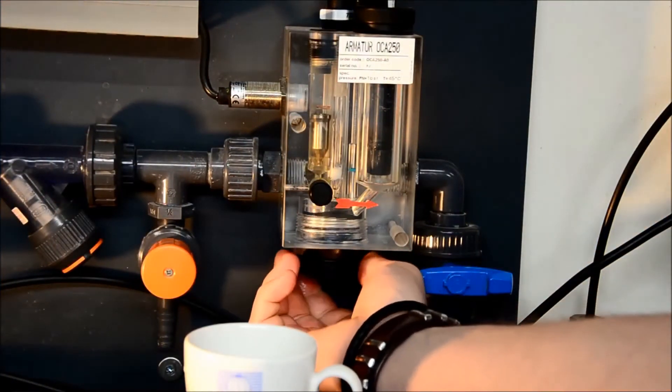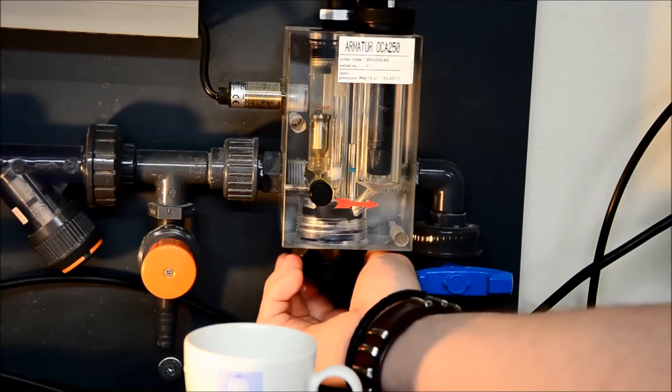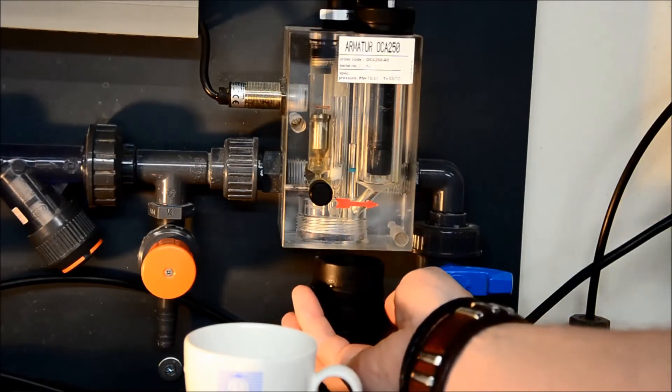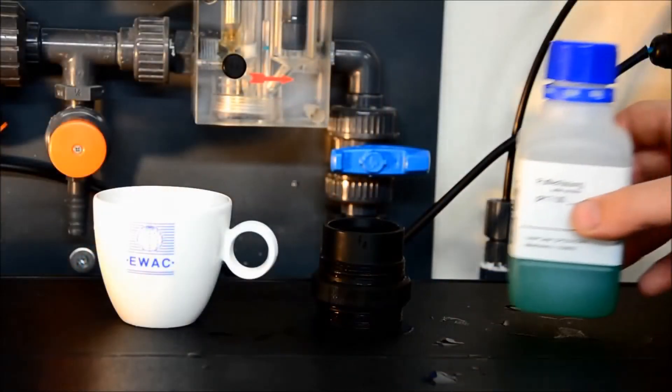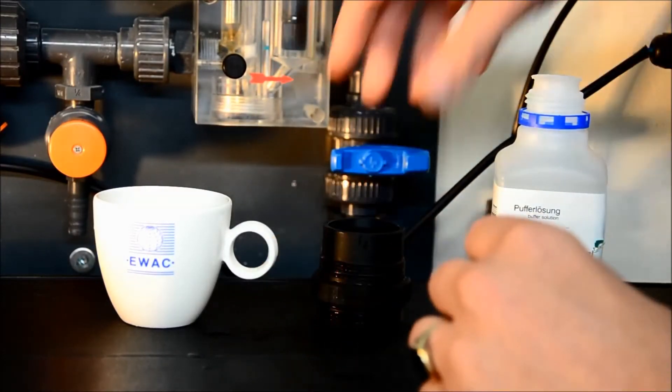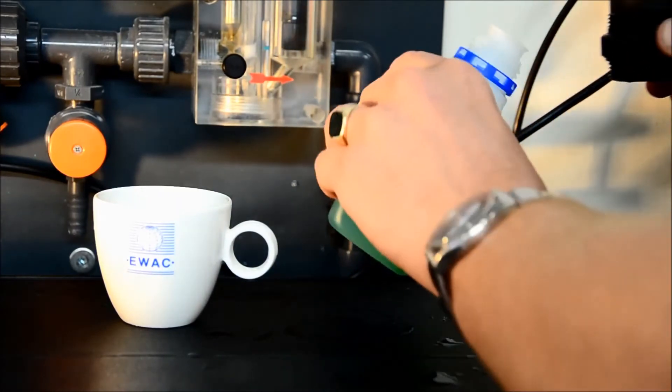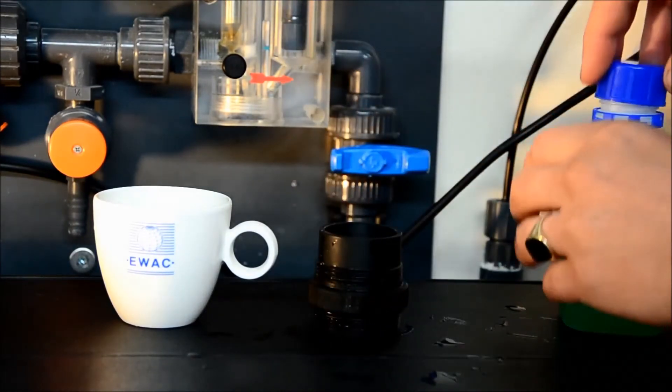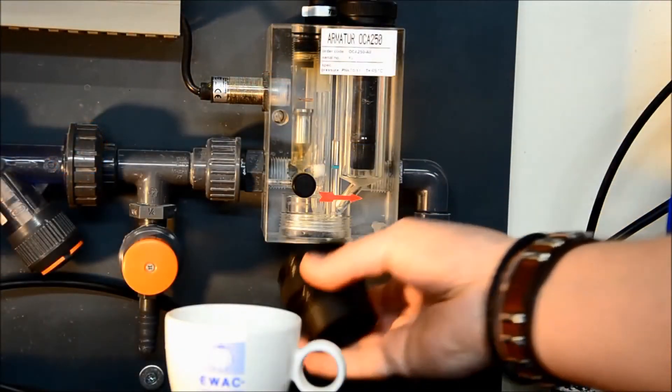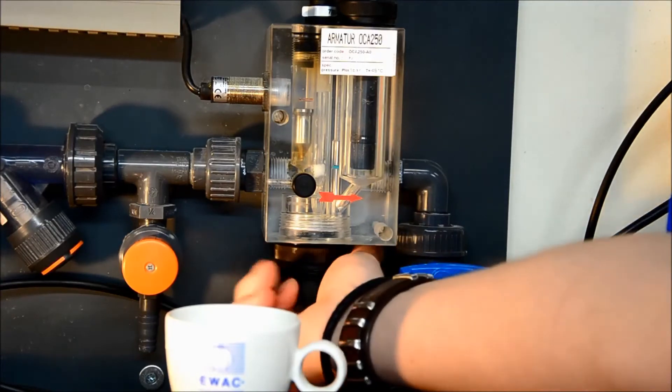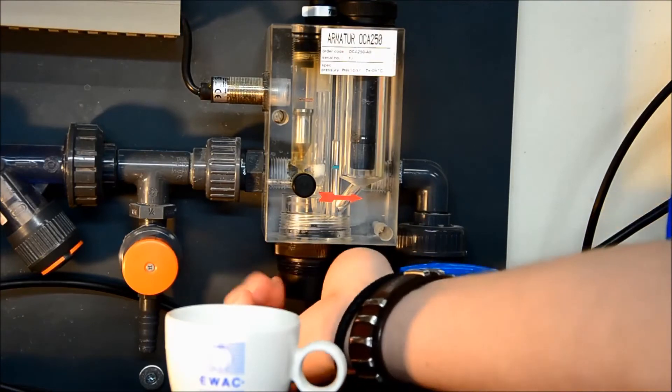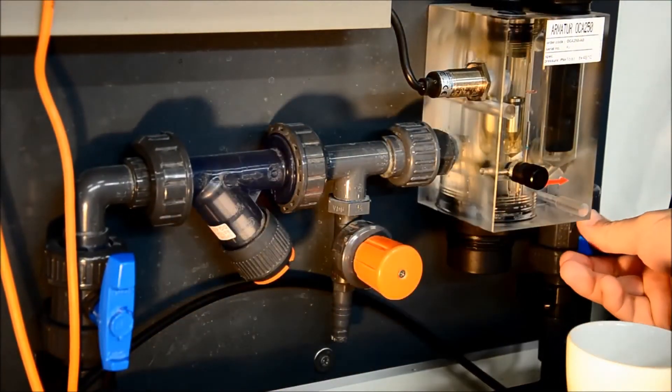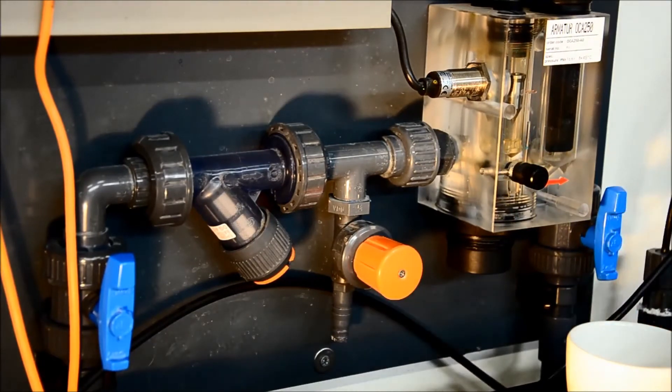Now we can remove the calibration cup from the measuring unit. The calibration fluid can be poured back into the container. After that the cap can be screwed back into the measuring unit with the shallow side up. Once the cap is tightened the isolating valves before and after the measurement unit can be opened again. This will allow water to flow through the measurement unit again.